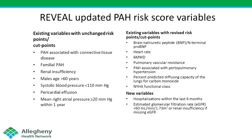We've made significant adjustments to the REVEAL score based on advice from community practitioners and expert PAH physicians worldwide, and the updated score was presented at the 2017 ATS meetings. We've determined more cut points for individual variables to make it more versatile, added new variables like hospitalizations — which predict significantly increased risk for six months after they occur — and also provided measurements of GFR instead of simply assessing renal insufficiency.